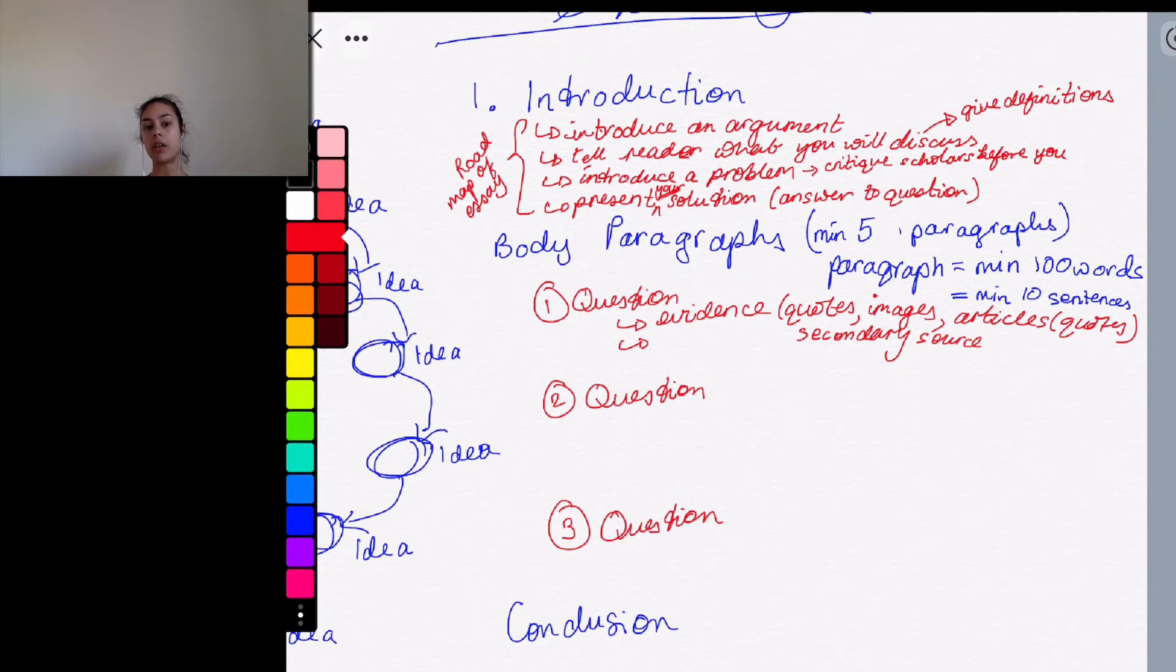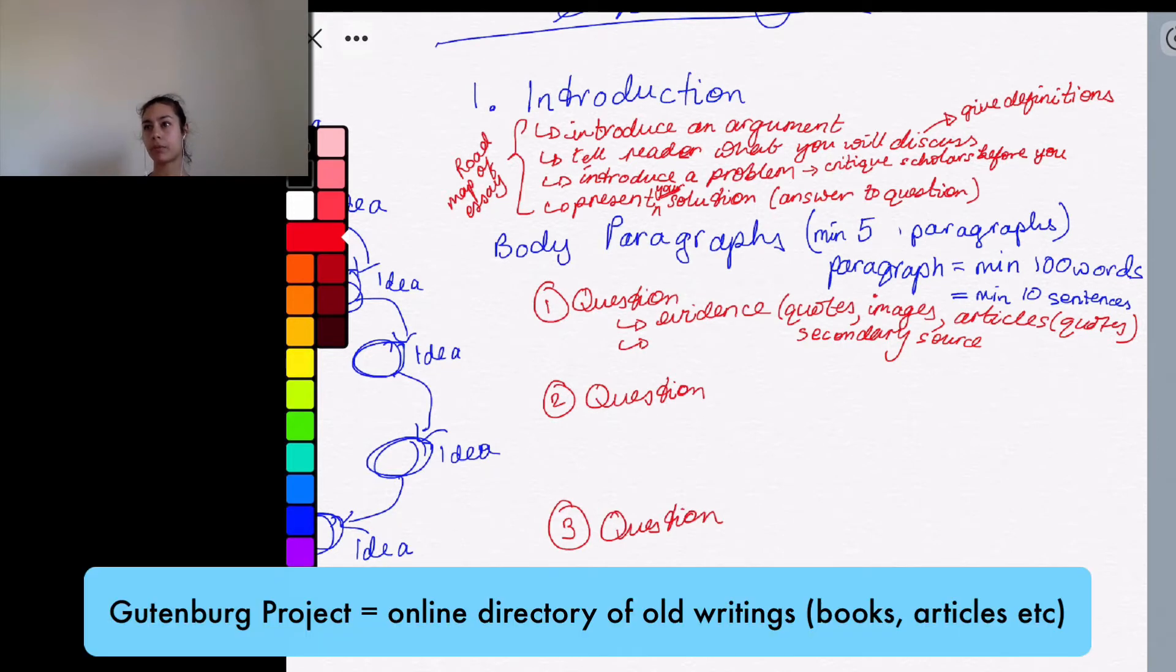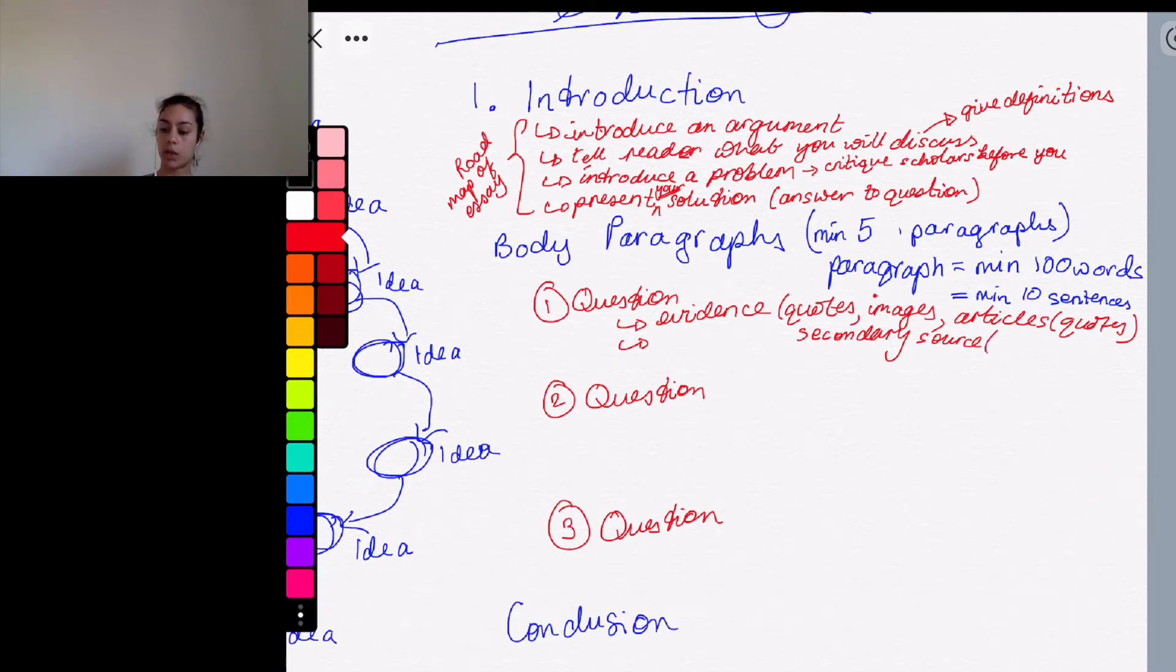So secondary source evidence you'll be using. The newspaper articles, you may not actually, it depends. Sometimes there are newspaper archives online. Sometimes libraries put their archives online, they've started digitizing everything. And the Gutenberg Project is actually this online project of lots of old texts that they've been putting online, so that might be interesting for you. Secondary source evidence is also quotes from scholars.